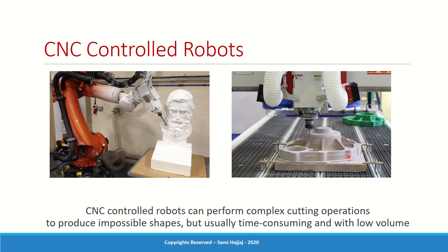The next paradigm is CNC-controlled robots — complex programs that can perform any kind of shape or complex operation. This is typically for complex robots and more complex operations. However, it's also very time-consuming — the parts produced may take a long time, which can cause a bottleneck. This kind of operation is usually not a high-volume operation.